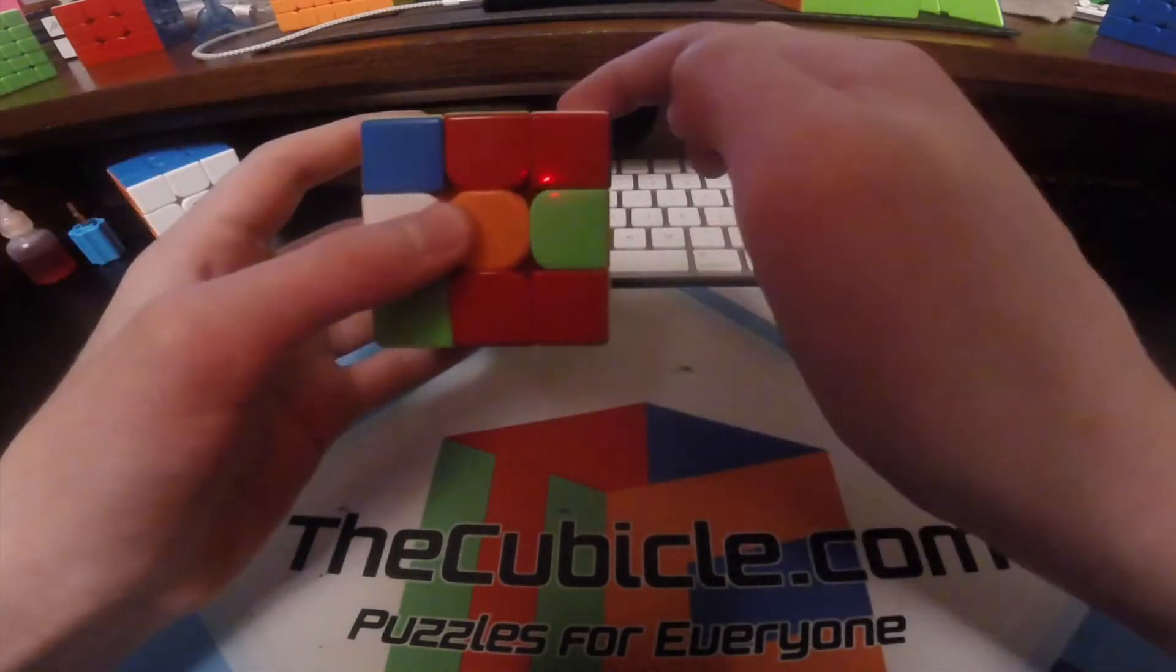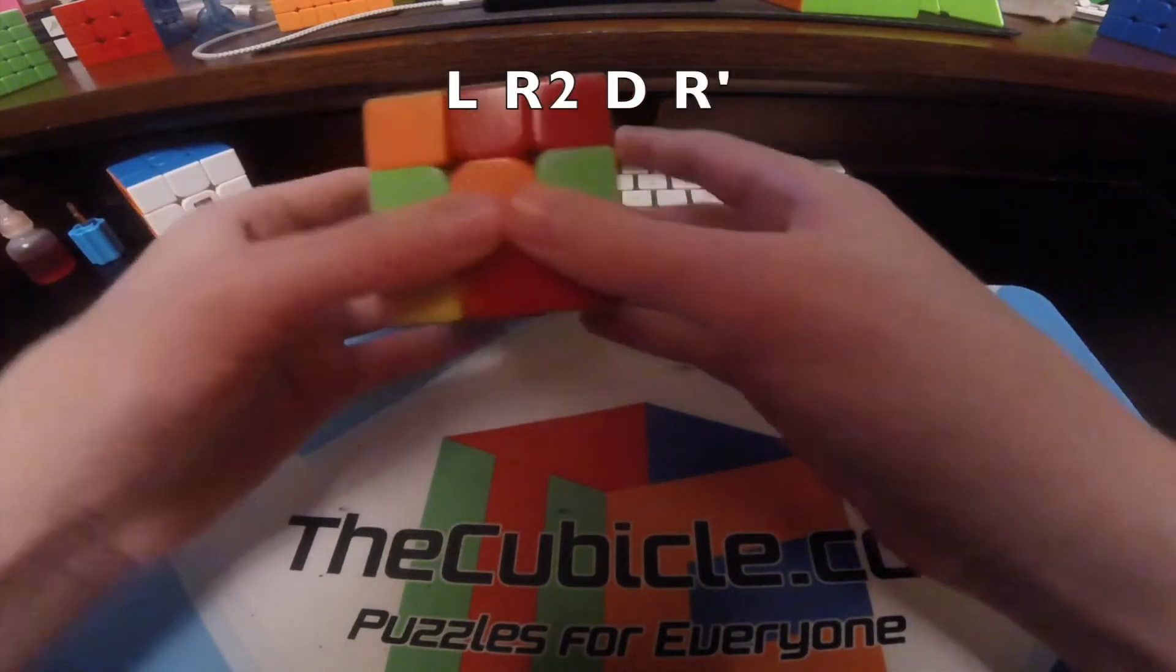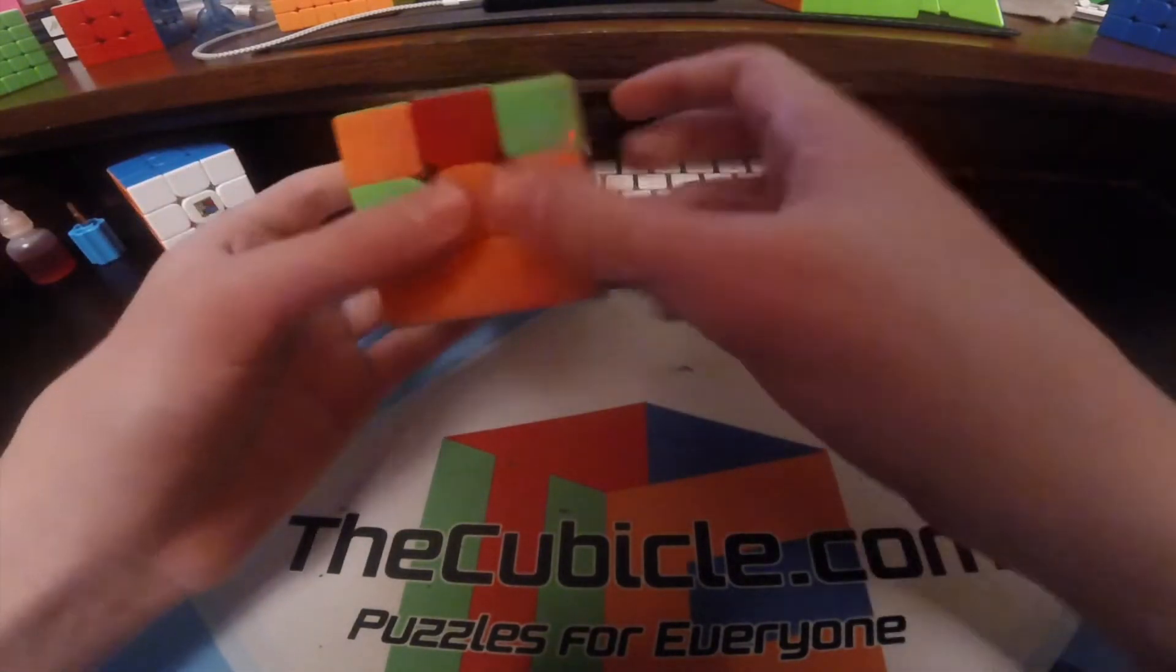This corner is going to end up here, and this edge is going to end up here. So I did an L, R2, D, R' to make the X cross.